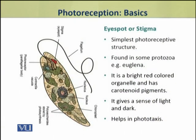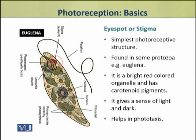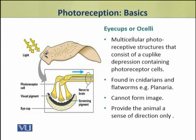The simplest photoreceptive structures, found in some protozoa such as euglena, are called eye spots or stigma. A stigma is a bright red-colored organelle containing carotenoid pigments. It gives the animal a sense of light and dark, but cannot form an image. This sense helps in phototaxis of these animals.